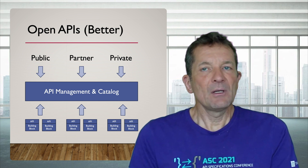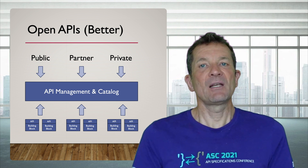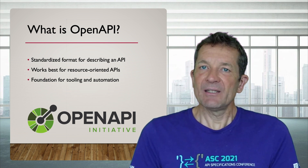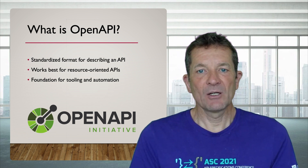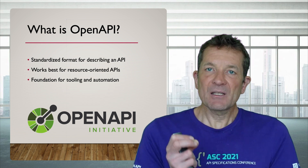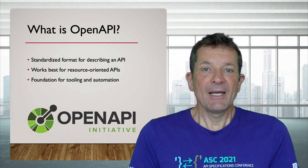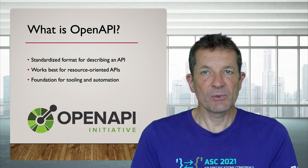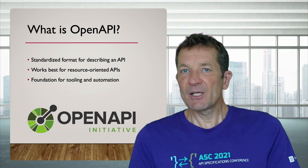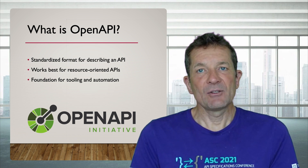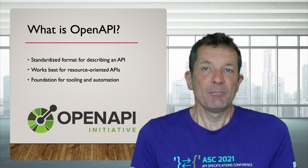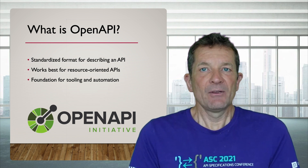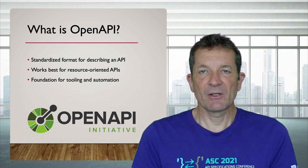This is an open API approach — opening up APIs so they can be consumed more easily. Now let's look at OpenAPI, which is really different. OpenAPI is a standardized format for describing APIs. It is used for a specific kind of API — resource-oriented APIs, most often those using the HTTP protocol. The current version is 3.0.1, and because it's a standardized format, you can build tooling and automation around it.